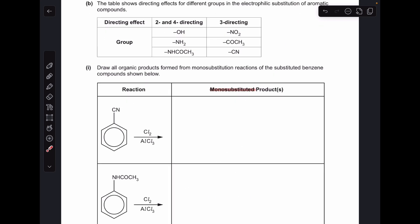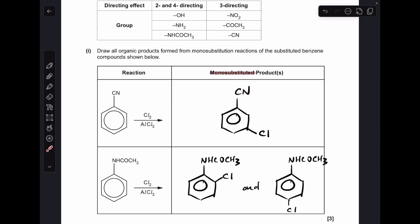Moving on to part B, we've got to show the mono substituted products for these two reactions. Obviously we've got to consult the table to see what directing effect the substituent groups have. This CN group here, we can see it's in the three-directing column, which means the product looks like that. You could have put the chlorine over there if you'd wanted to. Because this group here is two and four directing, we're going to have two possible products here: your two-product and your four-product.